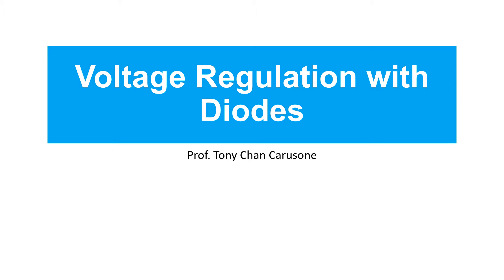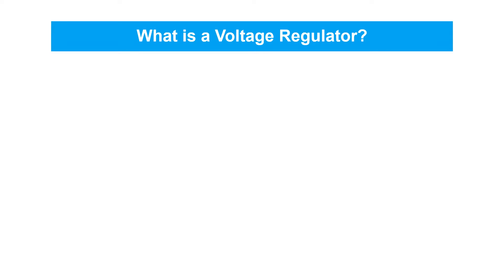In this video, we'll learn about voltage regulation with diodes. First, what's a voltage regulator? A voltage regulator is a circuit that we rely on to produce a constant DC voltage at the output, often the voltage is provided with respect to ground.